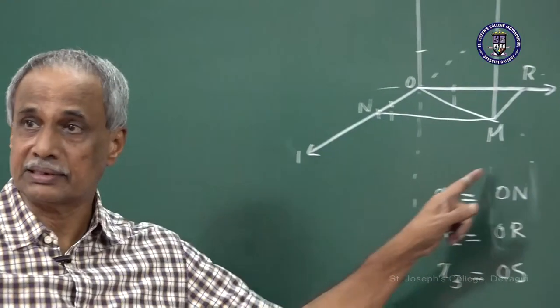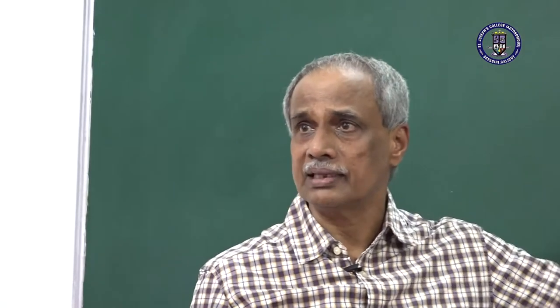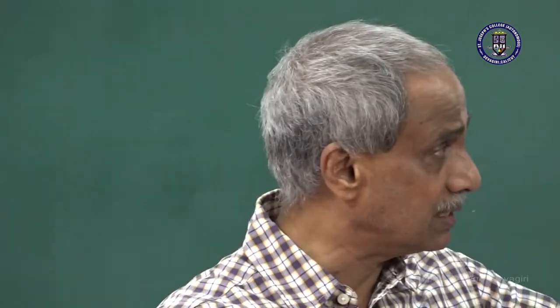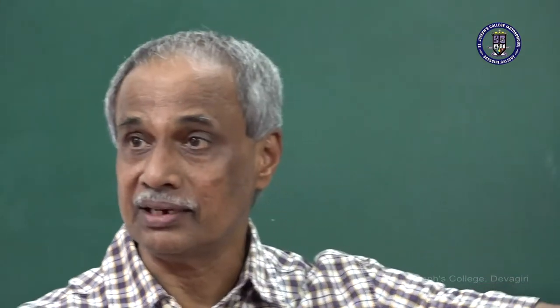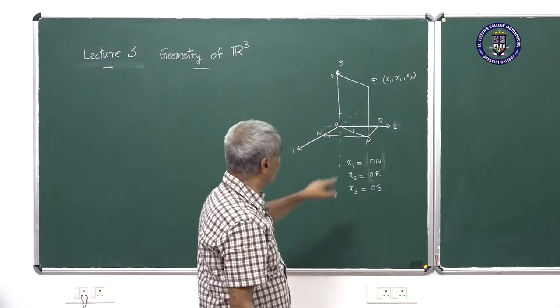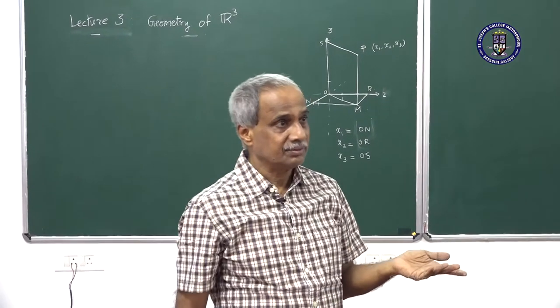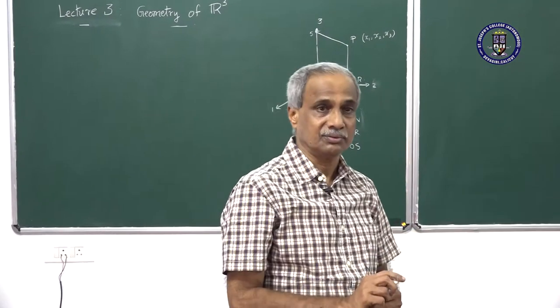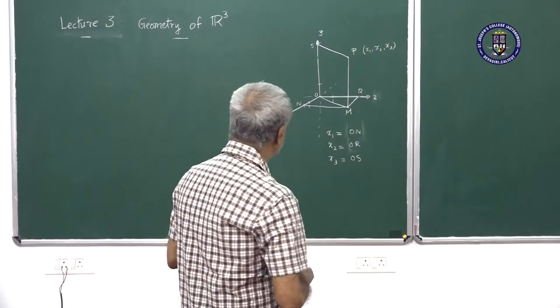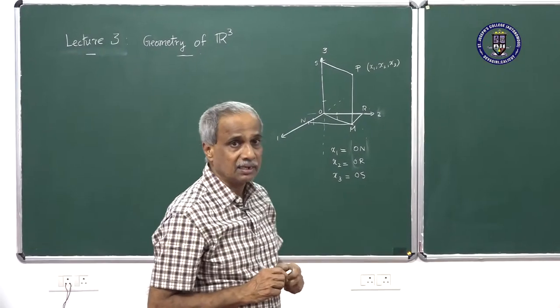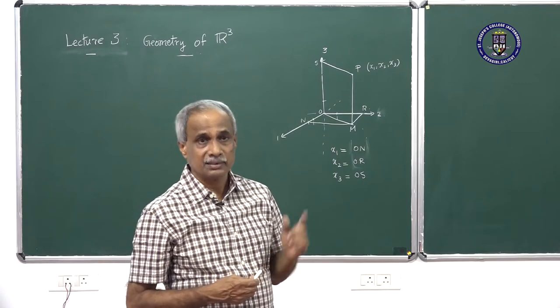These coordinates x1, x2, x3 can be positive or negative depending on where these points lie on these lines. If a point is on the negative part, then you get a negative number representing it. So x1, x2, x3 can be positive, negative, or even zero. This is how the three-dimensional representation of a point comes out — that is the Cartesian coordinate to represent a point in space.